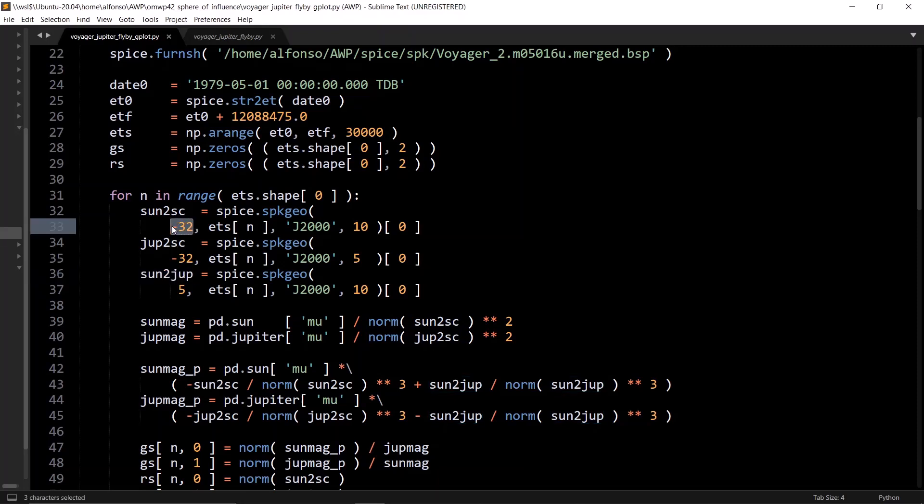We have here that the spice ID of Voyager 2 is negative 32 in this BSP kernel. We have whatever ephemeris time it is, the J2000 frame, and then 10 is the spice ID for the Sun, and 5 is the spice ID for the Jupiter barycenter in this case.